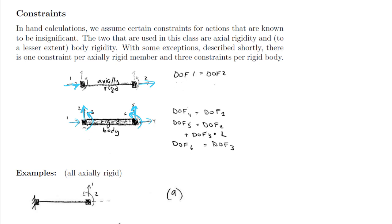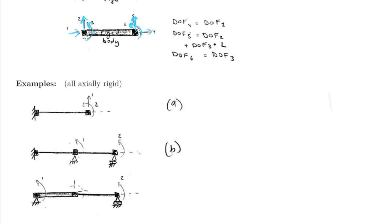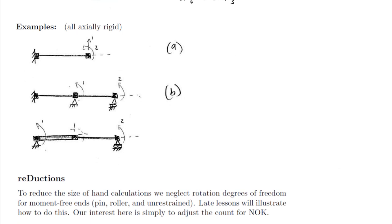An axial constraint reduces it by 1 in general, and a rigid body constraint reduces it by 3 in general. Let's look at some examples. All of these members are axially rigid.